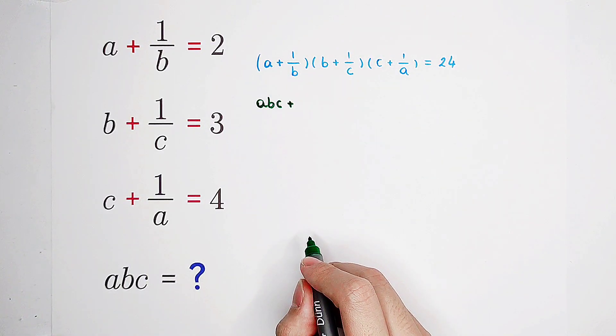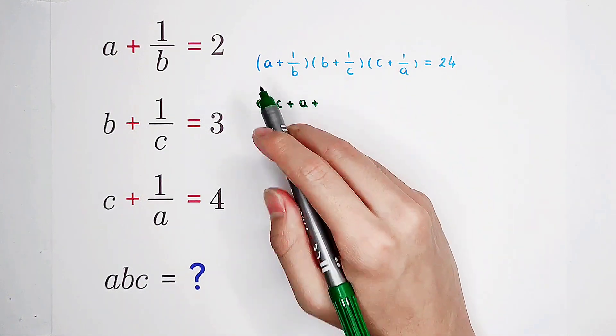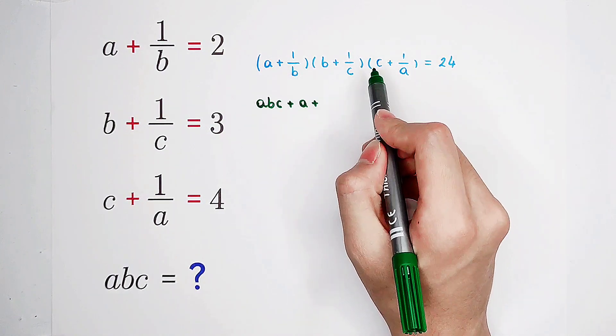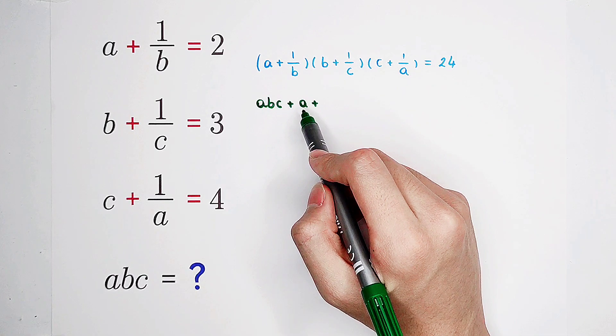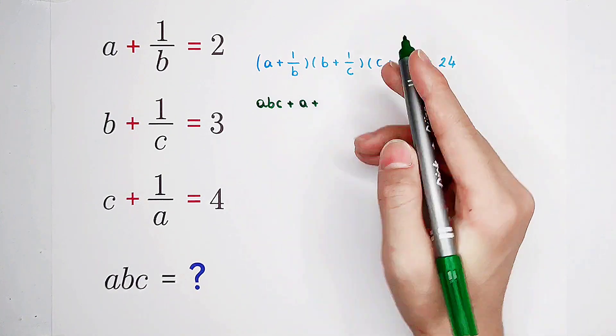Plus, here, a times one over c times c, we have a. a times b times one over a, we have b.